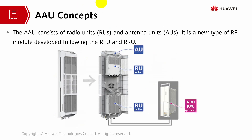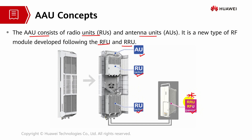The AAU consists of radio units and antenna units. It is a new type of RF module developed following the RFU and RRU system. The RUs in AAUs are classified as active, while passive refers to the traditional radio units such as RRU and RFU.